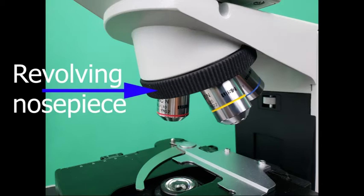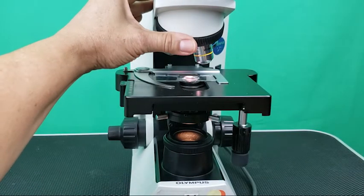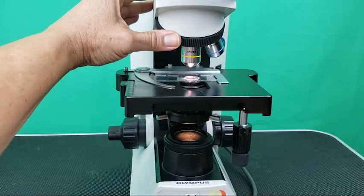Revolving nosepiece: This is a rotating nosepiece which carries objective lenses of different powers. The user rotates the nosepiece to change from one objective lens to another.